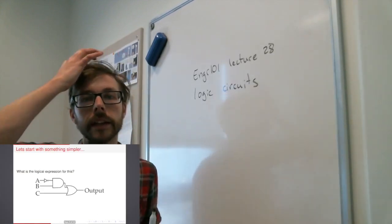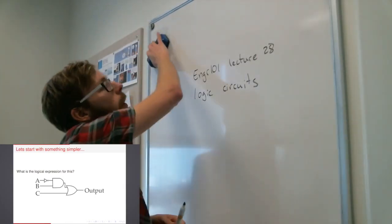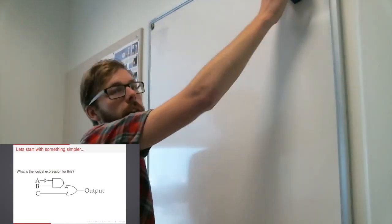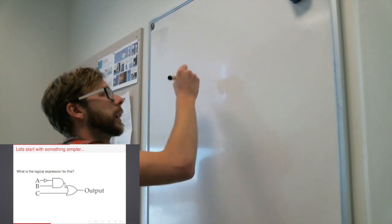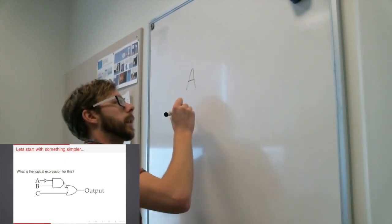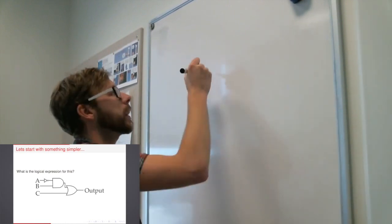So here's an example. Let's start with this. So we've got an example and we want to write a logical expression for this particular circuit here. So I've got my three inputs, A, B, and C,